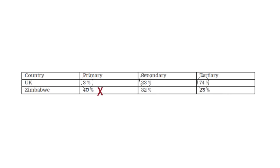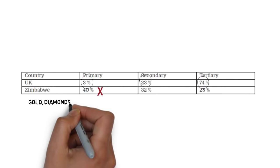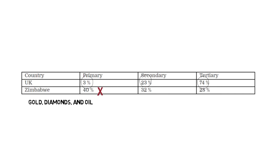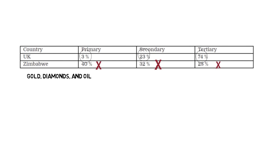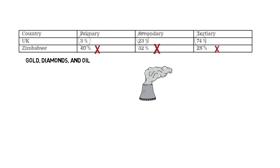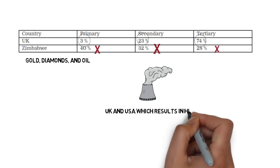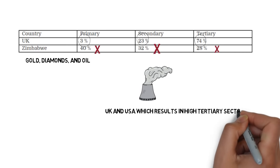On the other hand, Zimbabwe has 40% for the Primary sector, meaning nearly half of all businesses involve physical work — extracting resources from the Earth such as gold, diamond, and oil. Manufacturing is 32% and Tertiary is 48%. Most resources extracted and manufactured are exported to countries like the UK and USA, which results in a high Tertiary sector in those countries. Zimbabwe is an example of a developing country.